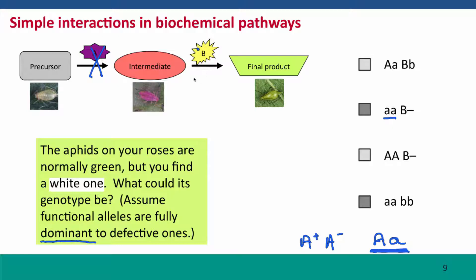There are all of the possibilities for the B locus are possible. The individual could be big B, big B. They could be big B, little b, both of which are included in this symbol here.